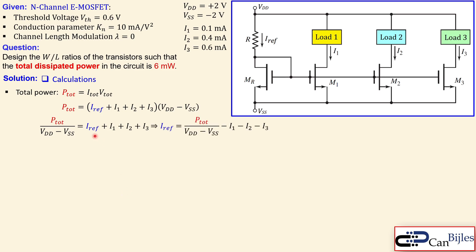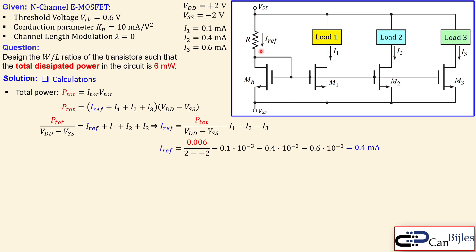The reference current is the only unknown at this point. It can be calculated as: 0.006 W divided by (2 − (−2) V), minus 0.1 mA, minus 0.4 mA, minus 0.6 mA. This gives 0.4 mA. So the reference current is also 0.4 mA, and the total current sums to 1.5 mA.